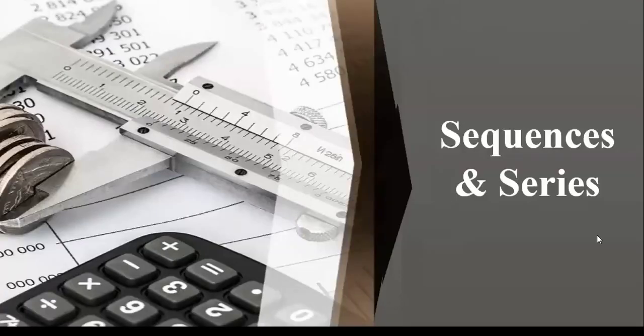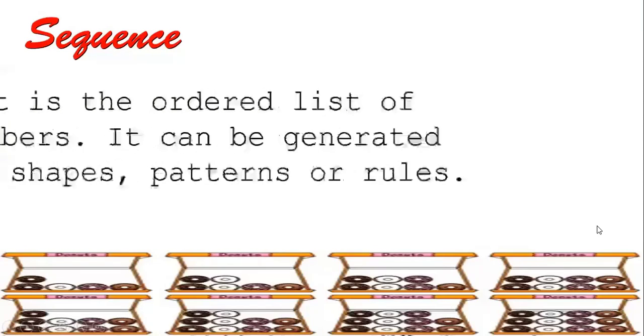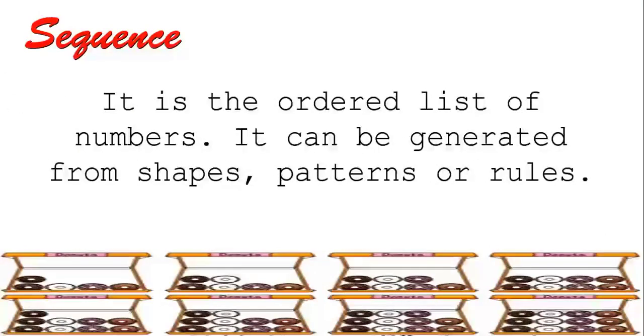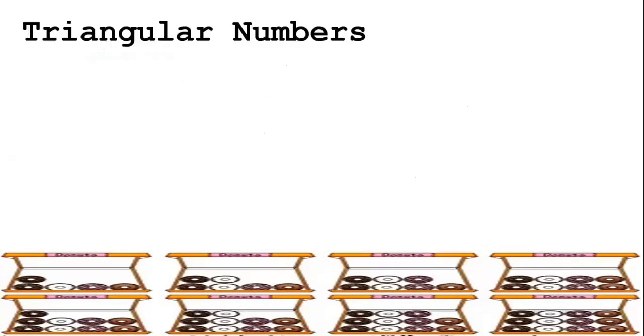Sequences and Series. When we say sequence, it is the ordered list of numbers. It can be generated from shapes, patterns, or rules. Each number in a sequence is called a term.